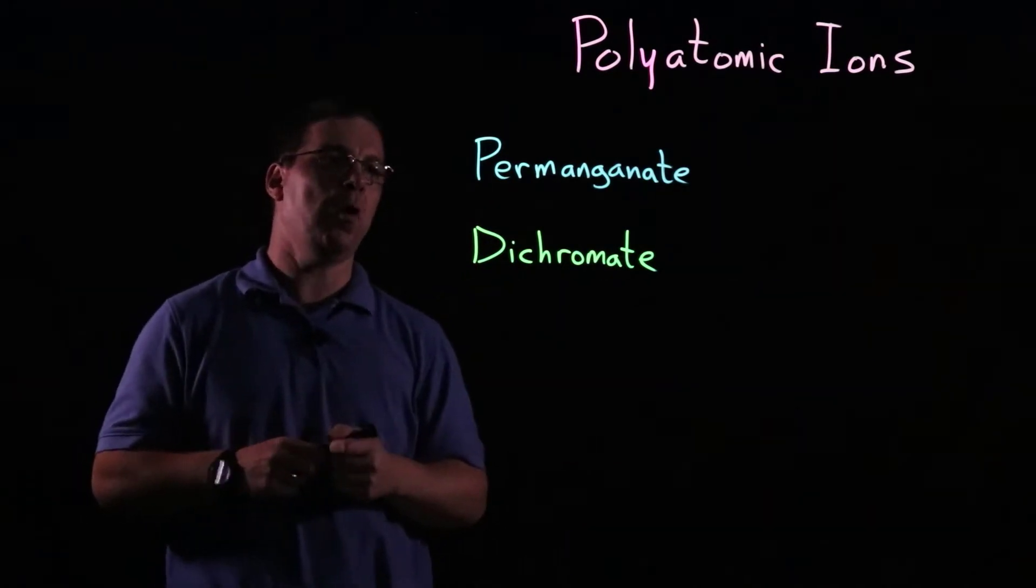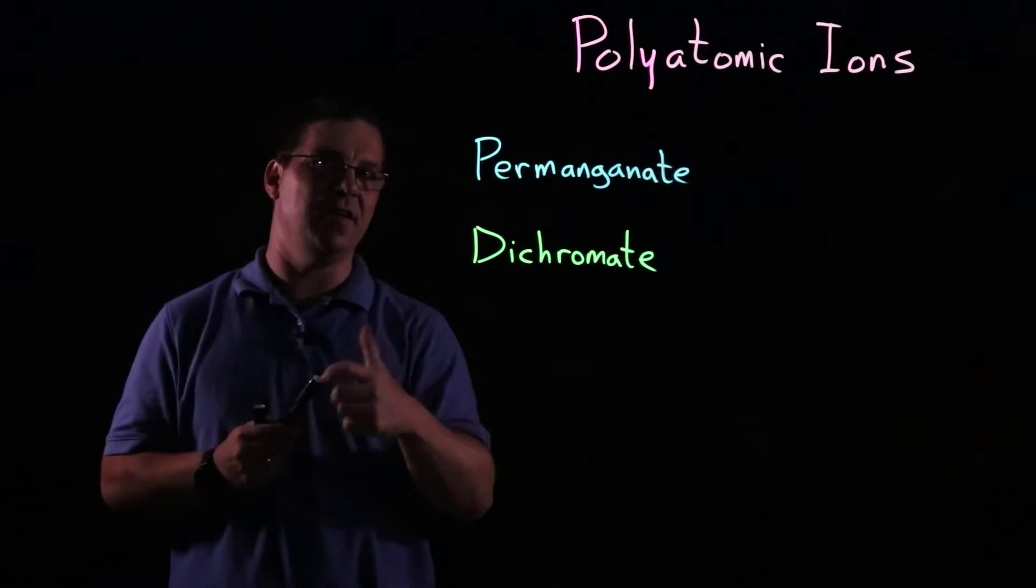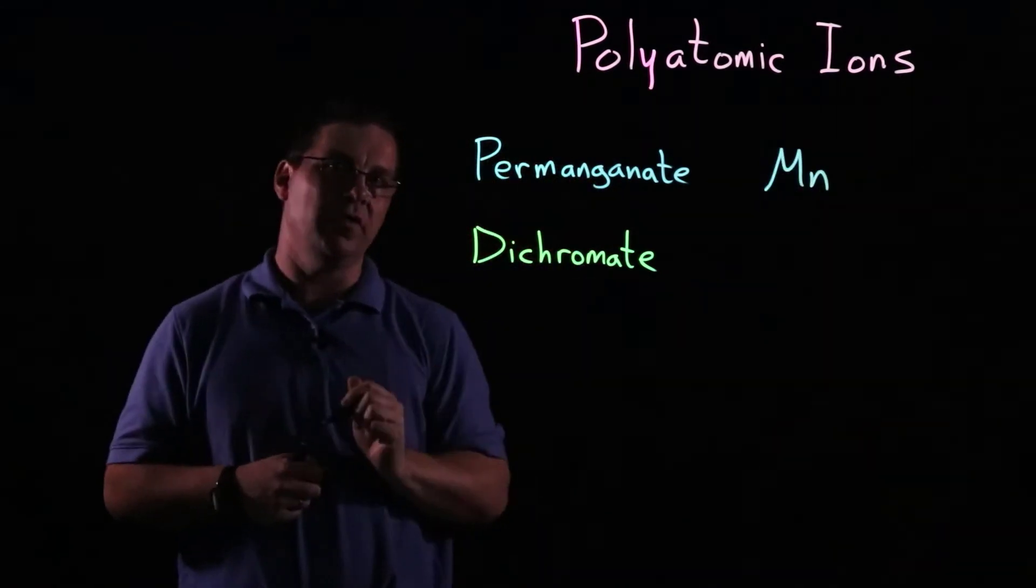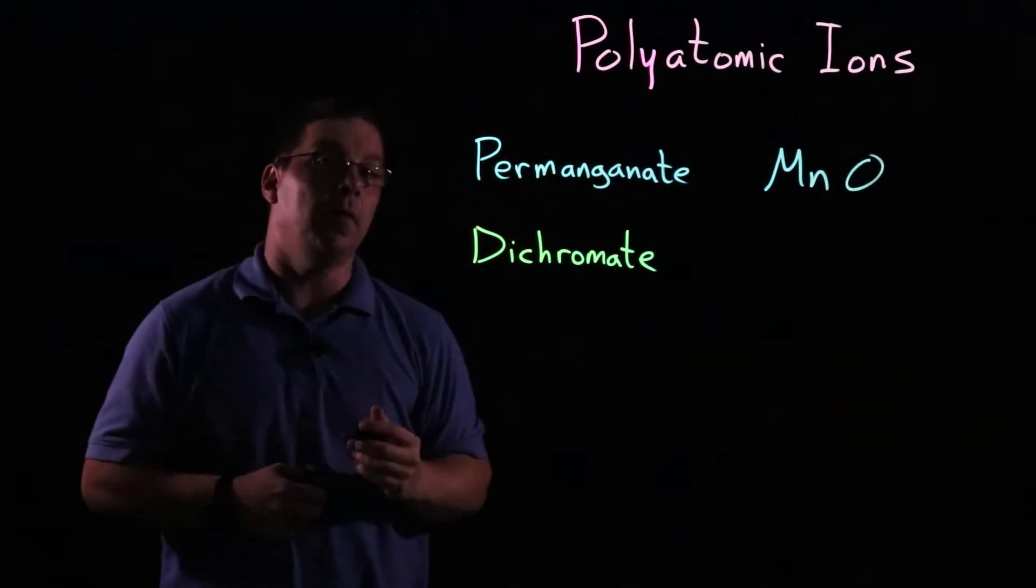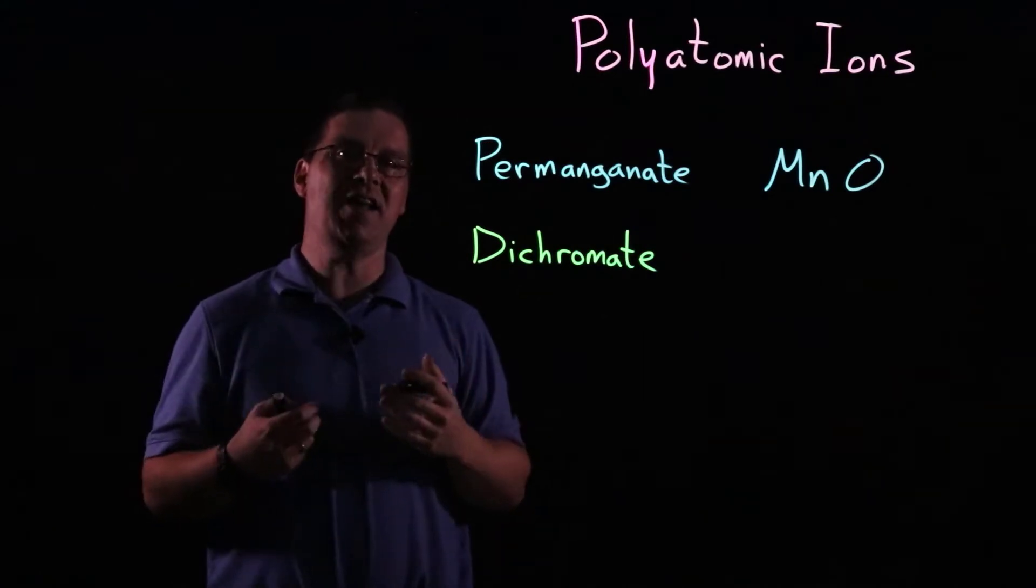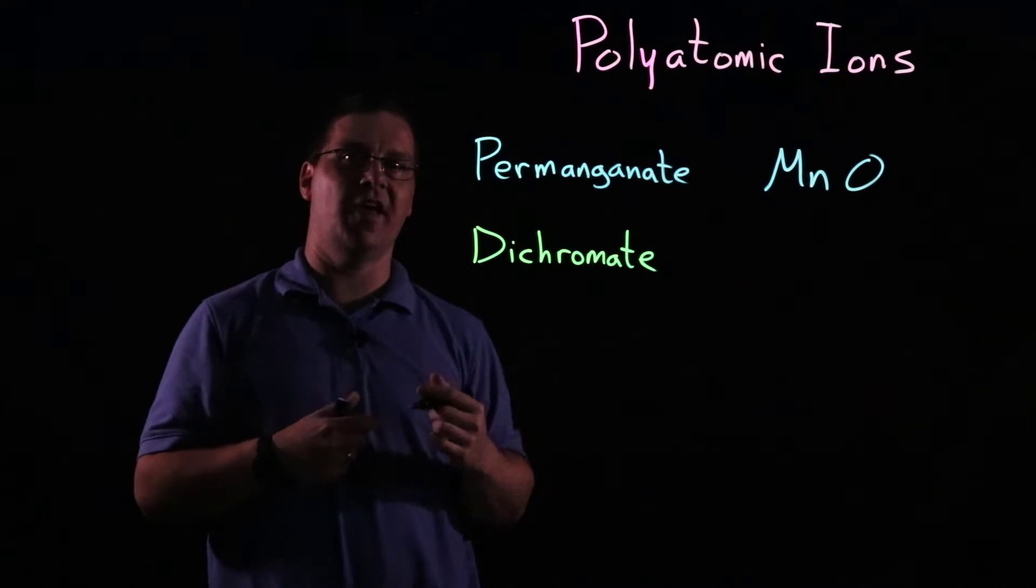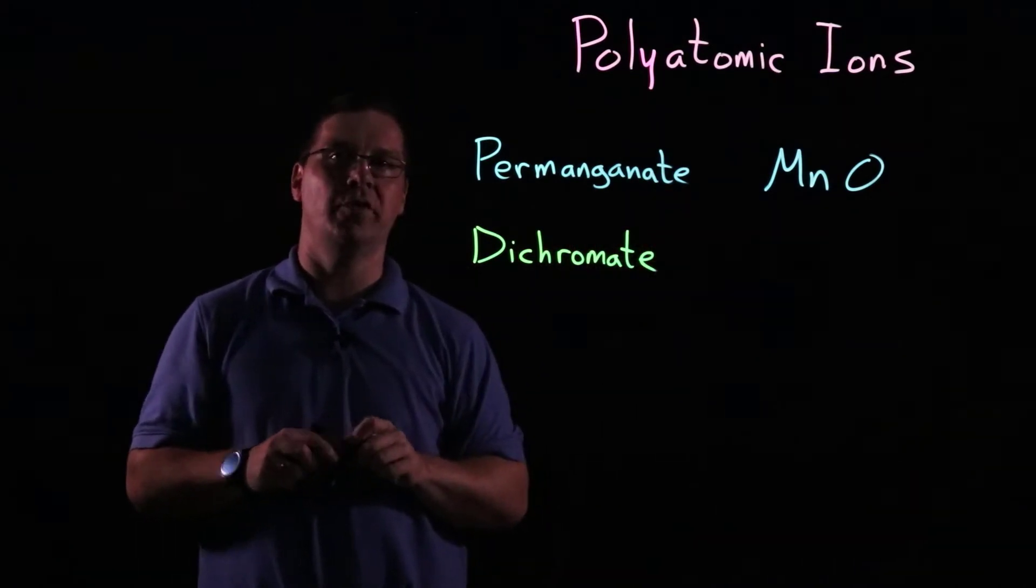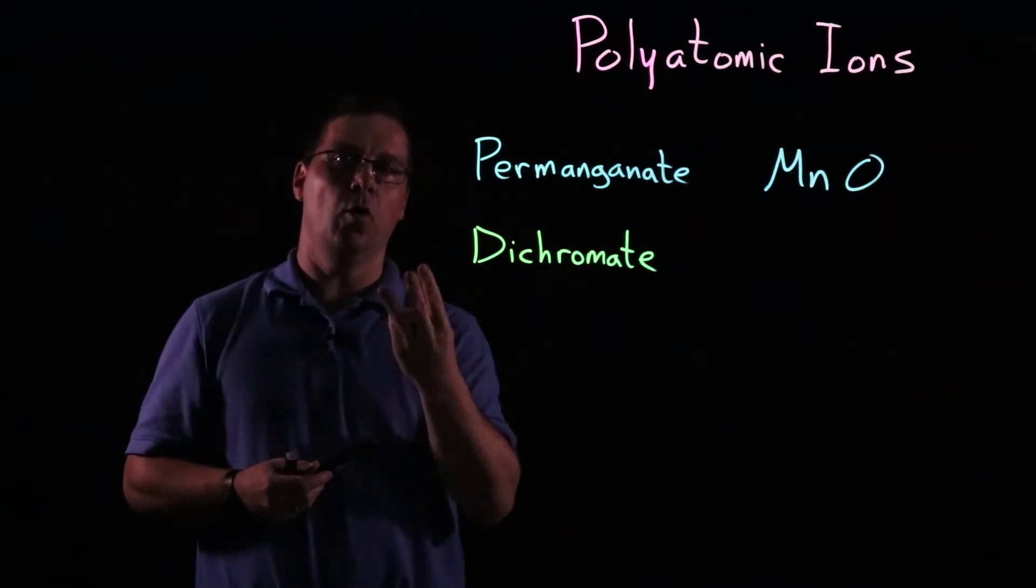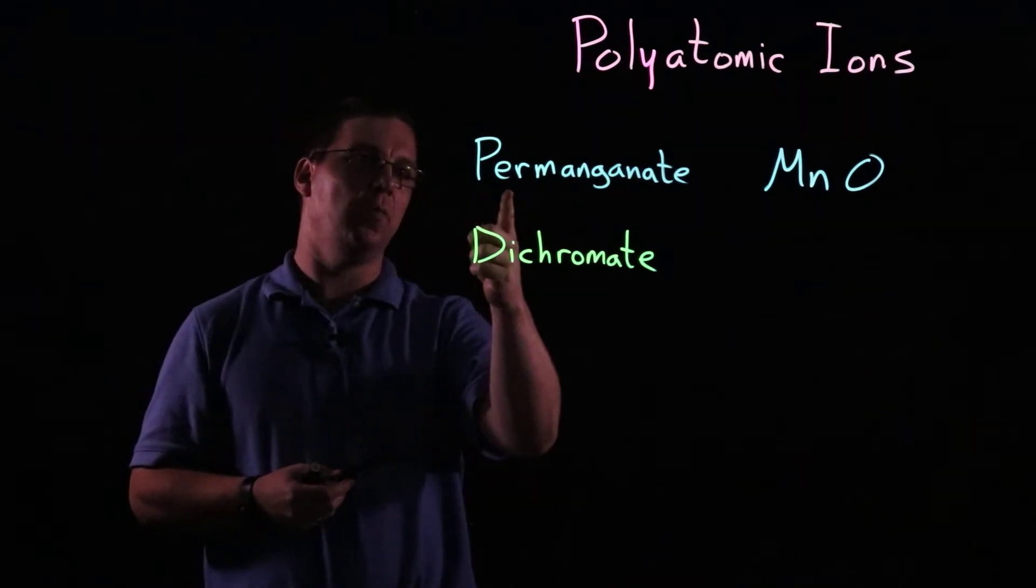So when we think about permanganate, we've got two things that we already know about it. We know it's got manganese, and we know it's got oxygen at the end. Now, the only thing we're not quite sure about off the bat is how many oxygens. But if we think what did we learn when we learned the first set, the A-T-E ions, our choices were either three or four oxygens.